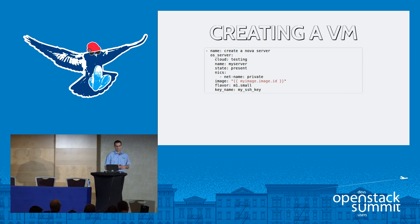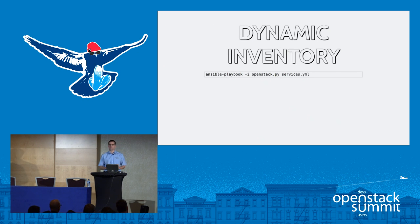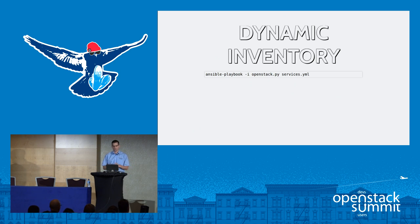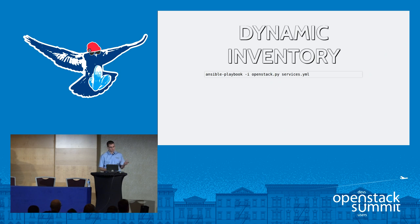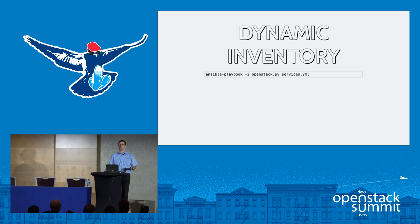There is also something very handy that is Shade-based: a dynamic inventory driver for Ansible that you can point at your OpenStack. You can run an Ansible playbook with -i pointing to an executable that uses Shade to enumerate your resources in the cloud and enrich them with metadata. You can then use those as inventory variables in your playbook. This combination of firing up OpenStack resources directly from Ansible and using dynamic inventory to enumerate those resources and deploy services into them makes this a very powerful option for deploying cloud applications in OpenStack.